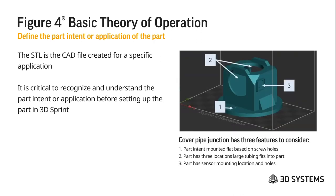Defining the intent of the application of the part is important. The part shown here has an intended mounting surface — it's intended to be mounted flat based on the screw hole location, so you've got a datum surface on the bottom. The part has three locations for large tubing that fits into holes, used as a junction so you can pass air or liquid. There is also a sensor mounting location with holes that will have a tighter tolerance, requiring proper support to get the best geometry and accuracy once printed.